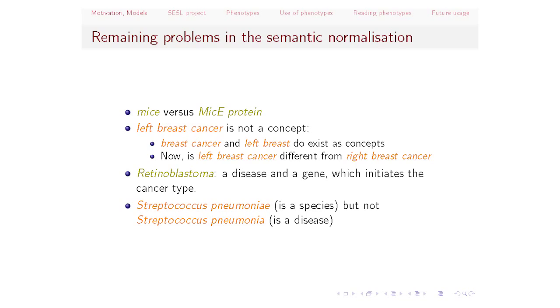There are other known language analysis problems. Some terms have different writing and different meanings — 'mice' is a species and 'MICE' is an acronym for a protein. Then there's the problem of 'left breast cancer': from standard resources we know 'breast cancer' as a disease and 'left breast' as anatomy. The question is whether left breast cancer is different from right breast cancer — the survival rate may differ. So this is a semantic problem.